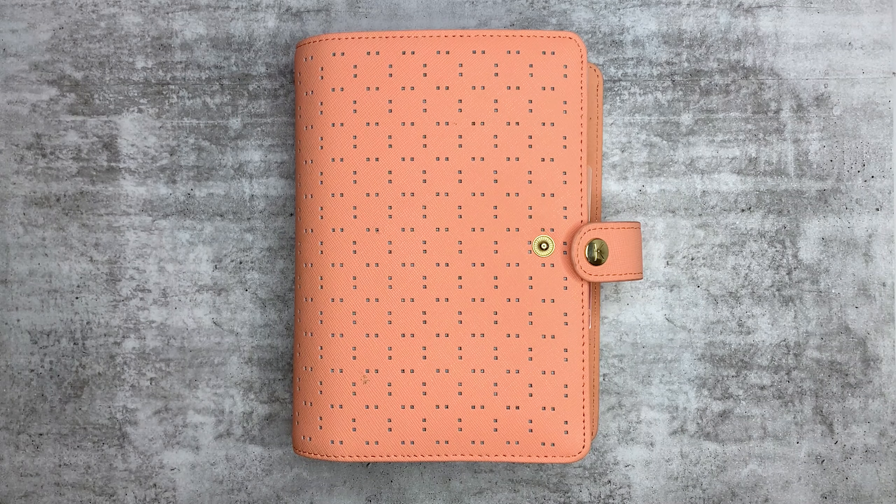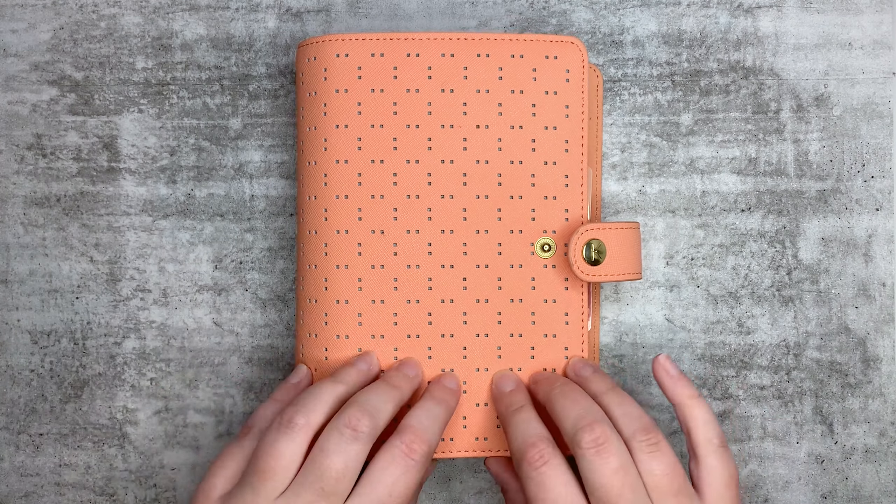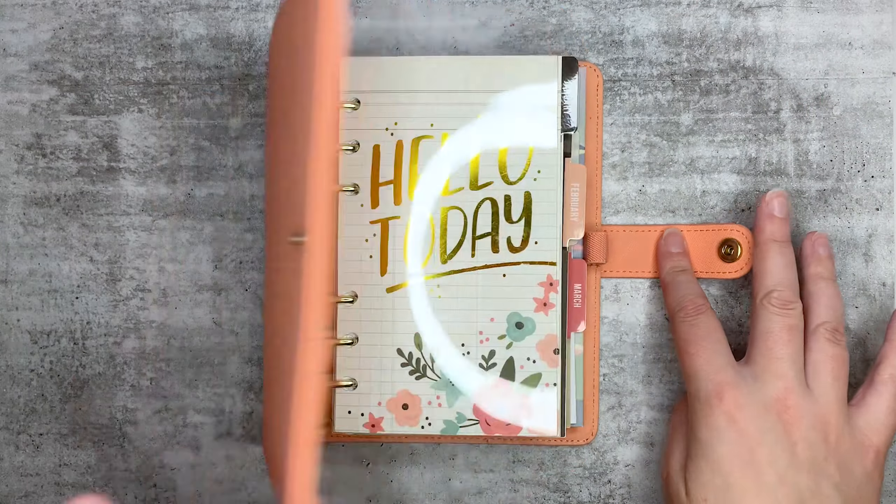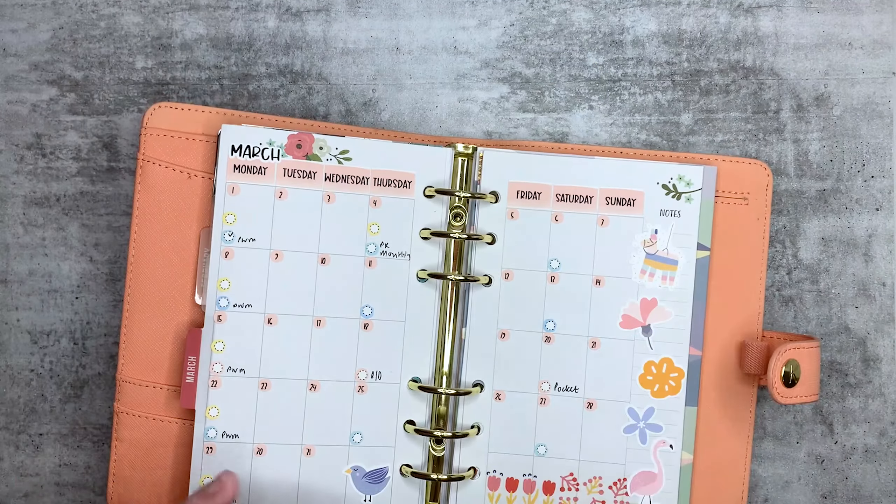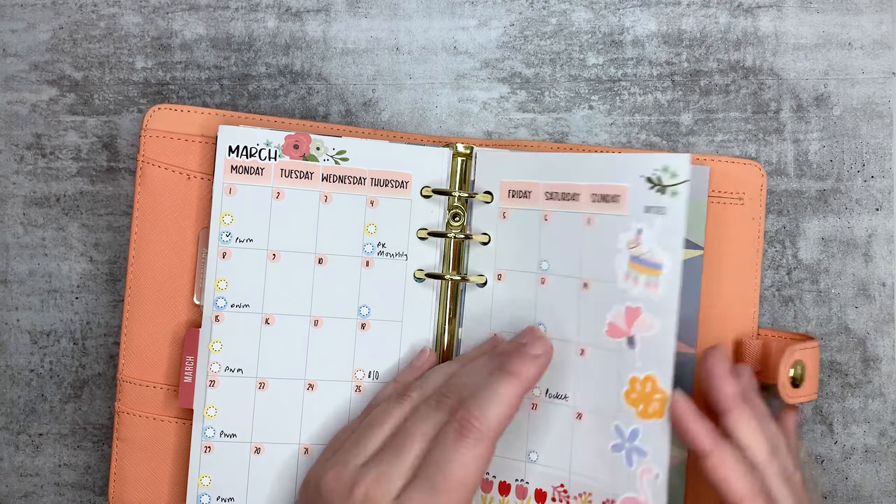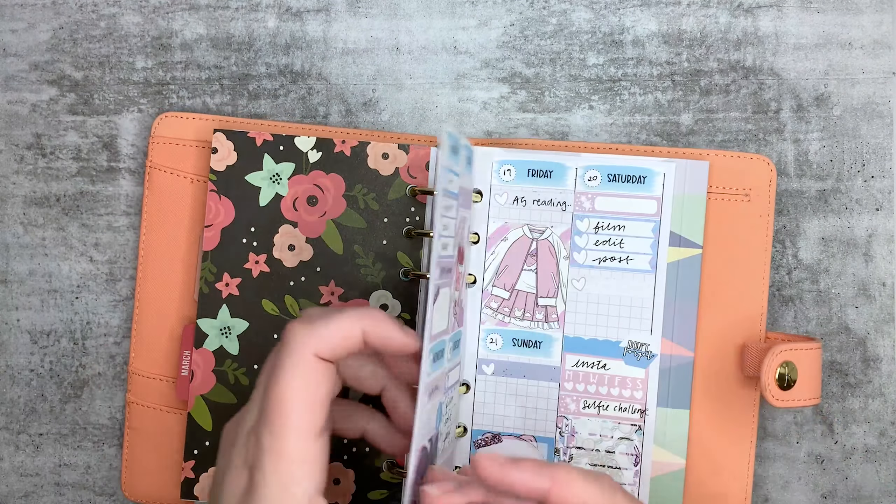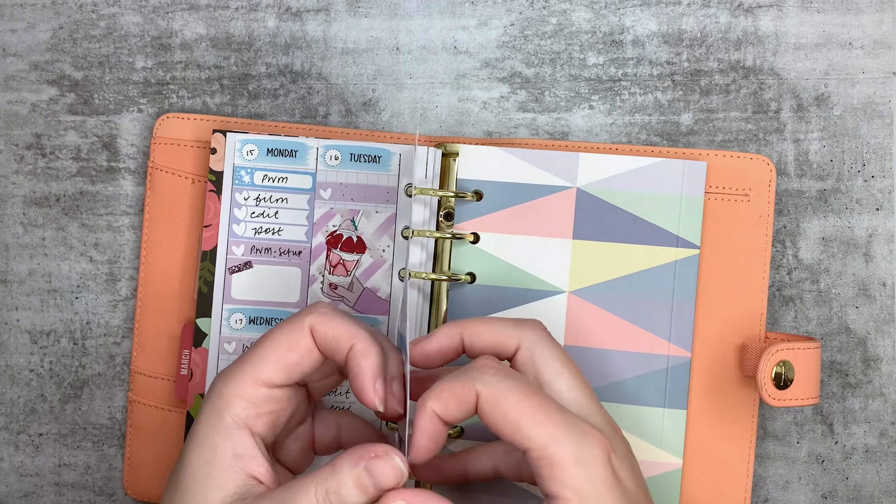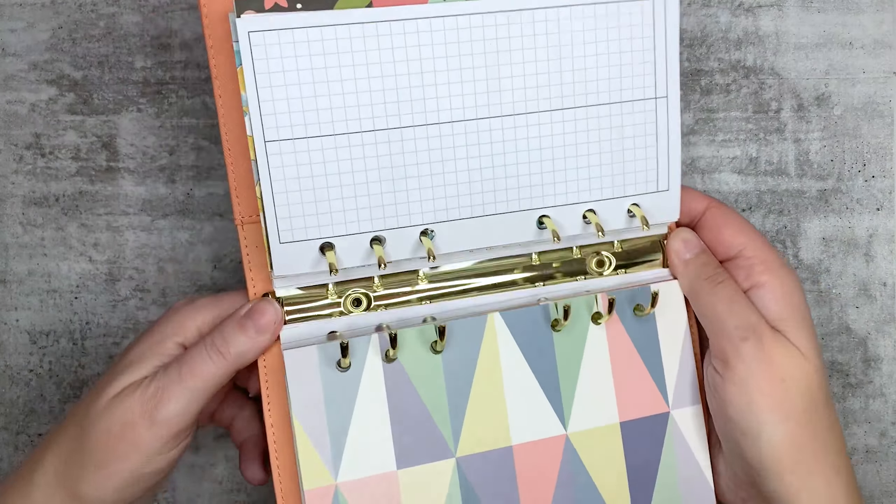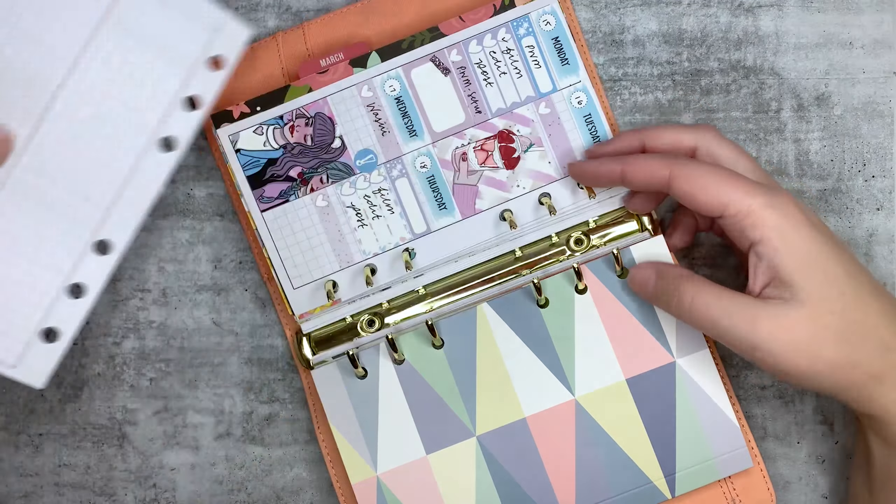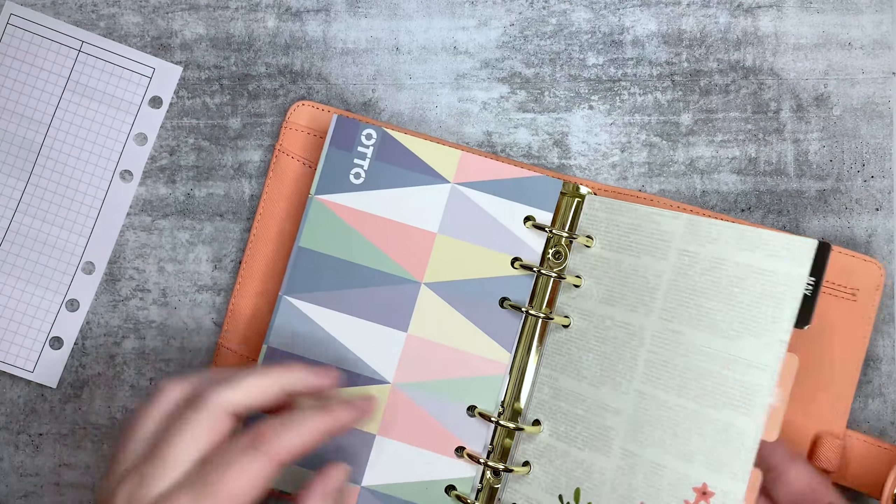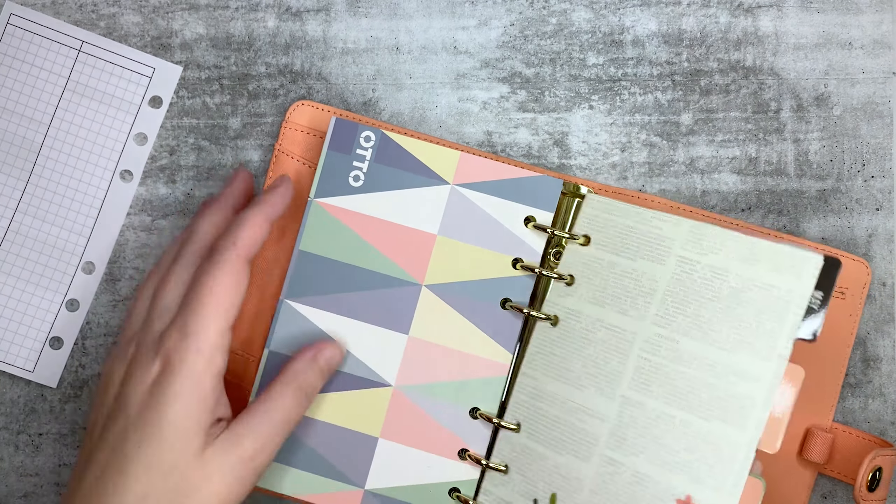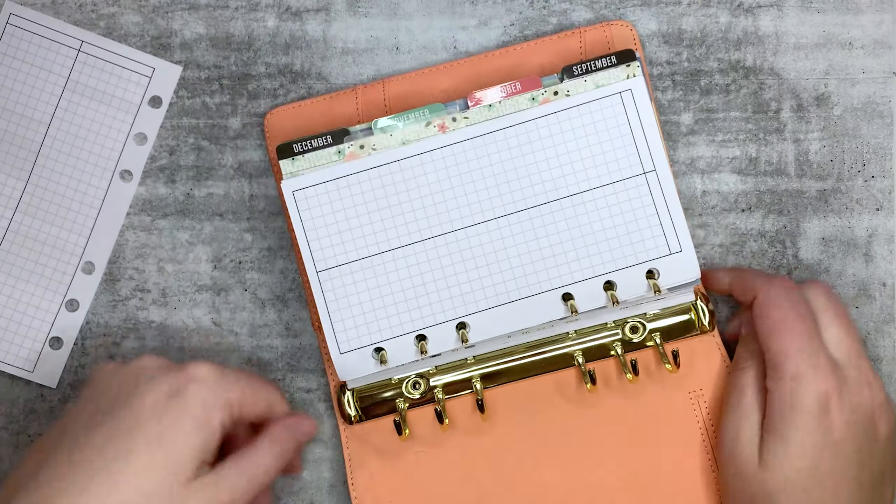Hi everyone, Amy here from Amy's Plan, and welcome back to my channel. Time for another weekly setup in my personal rings. There's my pen, I couldn't find it. So today I'm going to do a bit of a setup for social media. Where are my other inserts gone? I might need to cut some more inserts, so here's some more.